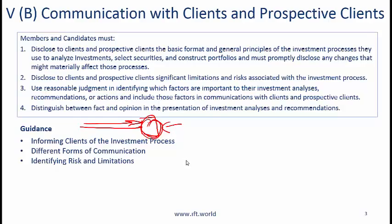Identifying risks and limitations: whenever you describe your process you need to also describe the associated risks and limitations. For example, if expressing an opinion about an investment product that has only been in existence for two years, your analysis is based on only two years of empirical data, which is itself a limitation that needs to be clearly communicated. You also need to make clear if an investment is heavily correlated with the market, meaning the risk of it declining when the market declines is also high.